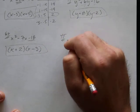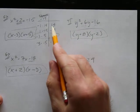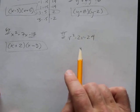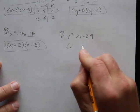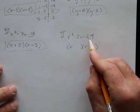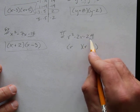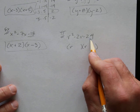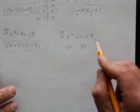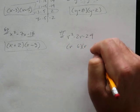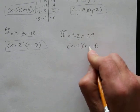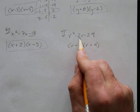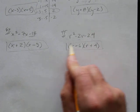Try r squared minus 2r minus 24. What multiplies to negative 24 and adds to negative 2? 6 and 4 multiply to 24, and 6 minus 4 is 2. Since I need negative 2, I use negative 6 and positive 4. Negative 6 plus 4 is negative 2, and negative 6 times 4 is negative 24. The factored form is r minus 6 times r plus 4.